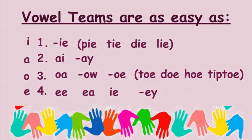There are four E teams: EE, EA, IE, and dash EY. EE and EA are the most commonly used. Sometimes I have to memorize some commonly used words if I don't recognize the team that goes in those words. For example, in the word week — there are seven days in a week — I'm going to use EE. But in the word weak — I was weak from swimming all day — I'm going to use EA.